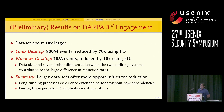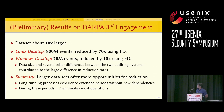Our system also participated in the DARPA third engagement program. The data for the third engagement was 10 times larger than the second engagement. The Linux desktop had around 800 million events, which we reduced 70 times using full dependence. The Windows desktop had 70 million events, reduced by 10 times. The larger the data size, the greater the reduction we achieve, because long-running processes cause global dependence to stabilize over time.